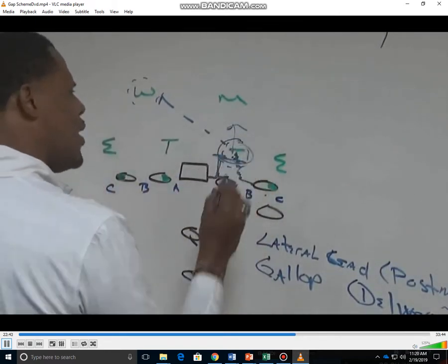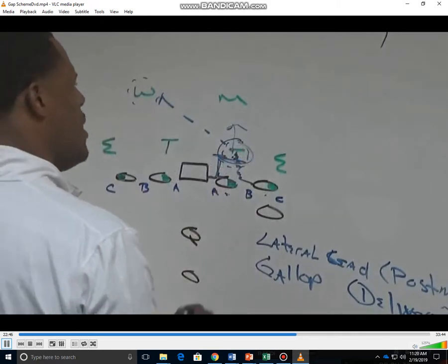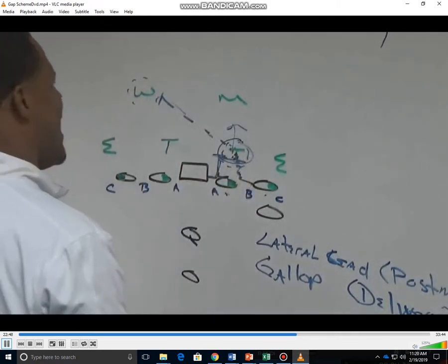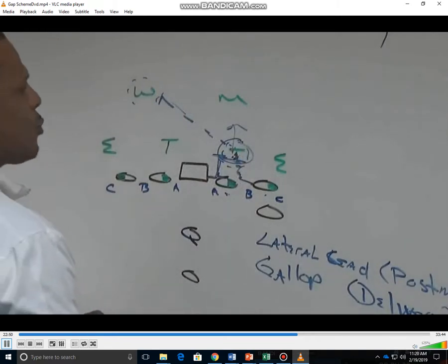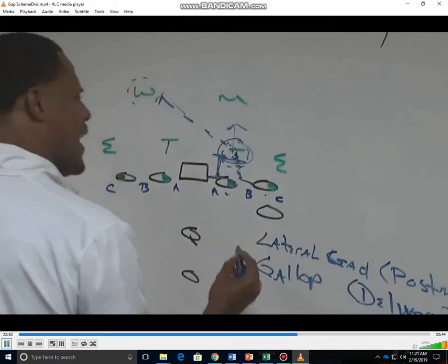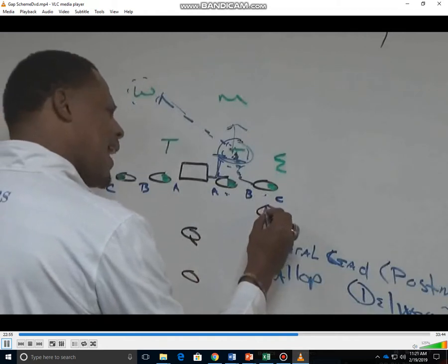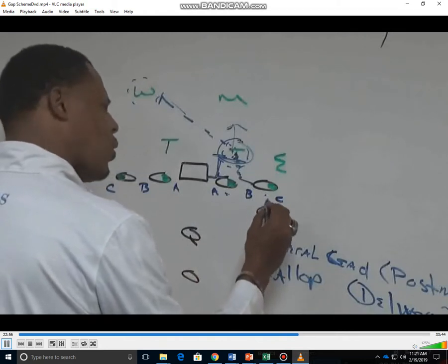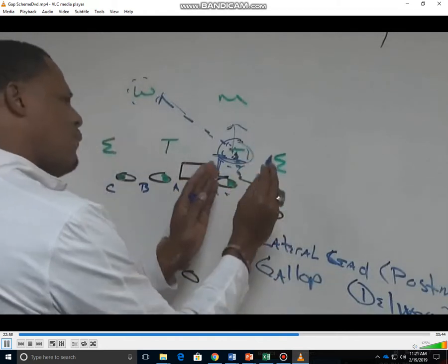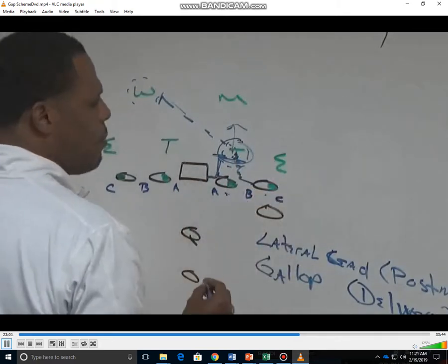We can feel the defensive linemen on our lateral lead and our gallop step, but we want to see the backside linebacker for a possible run through. When talking about the kick-out, most defensive linemen or defensive ends are taught to spill the down block.